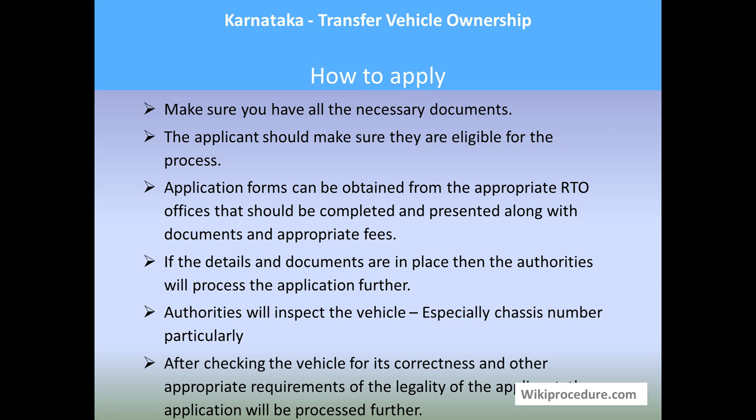You should also make sure that you are eligible for this procedure. Application forms can be directly obtained from the RTO office on your visit. Please complete the application form, attach all the documents, and submit it to an officer at the RTO office. The officer will check all the details and direct you to the counter where you need to pay. Submit your documents, pay the fees, and once received, the authorities will start internal processing and also inspect the vehicle, especially the chassis number, for authenticity before processing the application further.